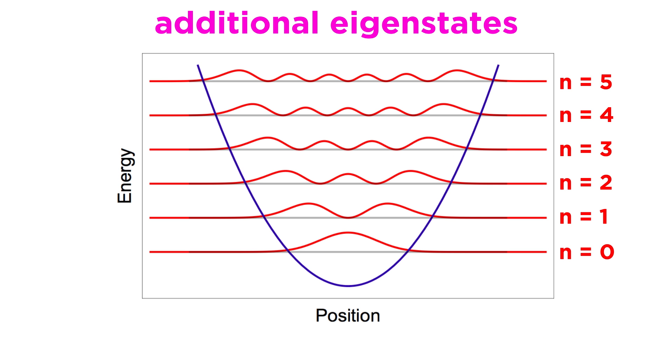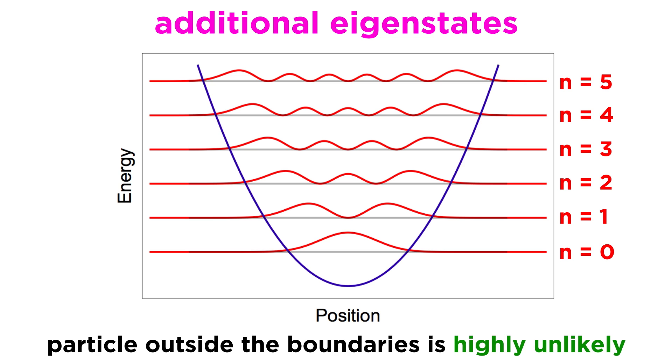We can plot additional eigenstates the same way. Here we see the first five excited states going higher in energy, and we can see the particle can be found in different regions of the harmonic potential, but rarely outside, given that the probability density function drops to zero in each case.